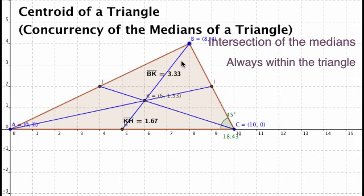The next is that it splits the median into two segments that are in a particular ratio, which happens to be two-thirds to one-third, or in other words, the longer segment is going to be twice the smaller segment in terms of length.